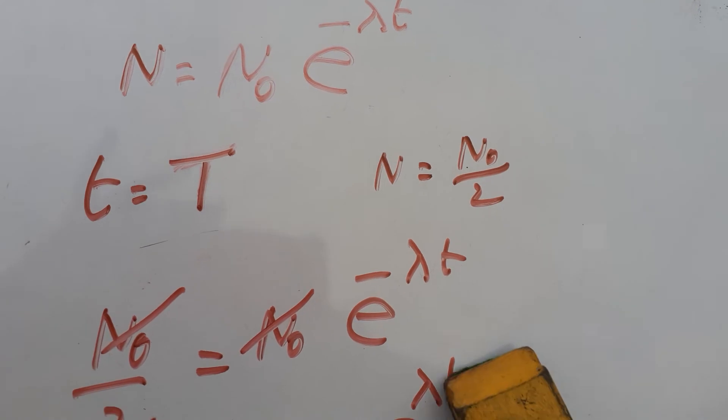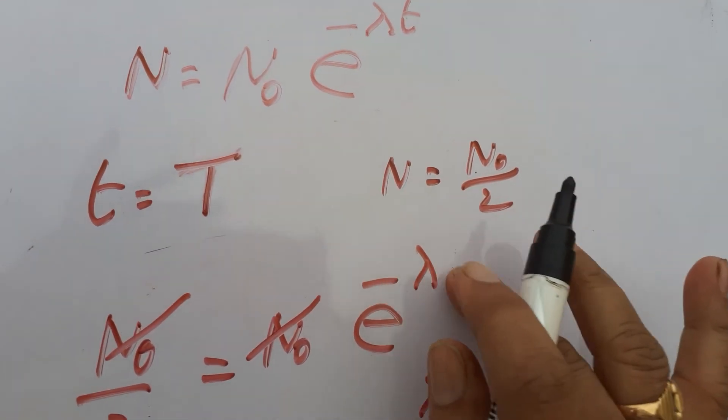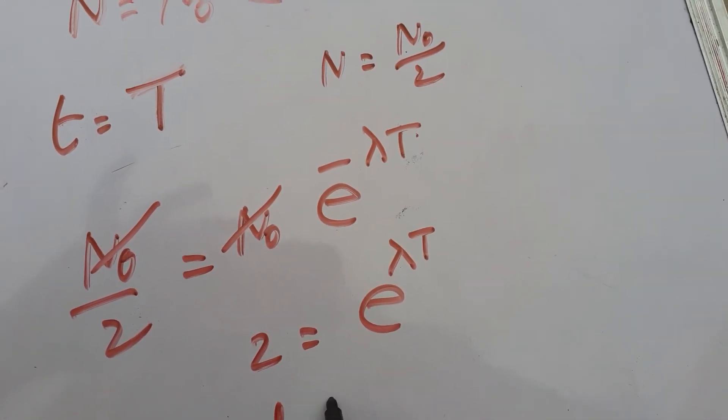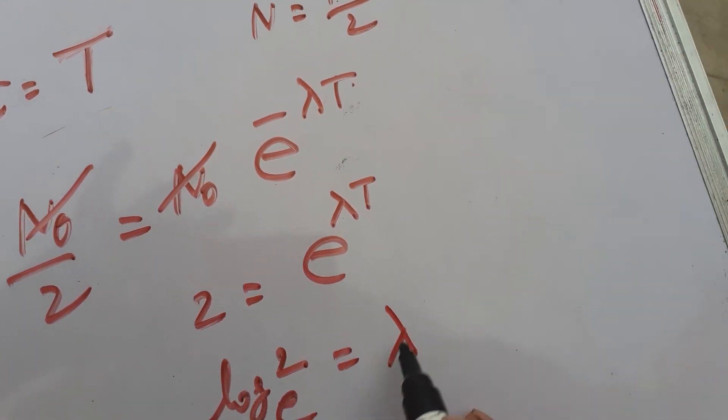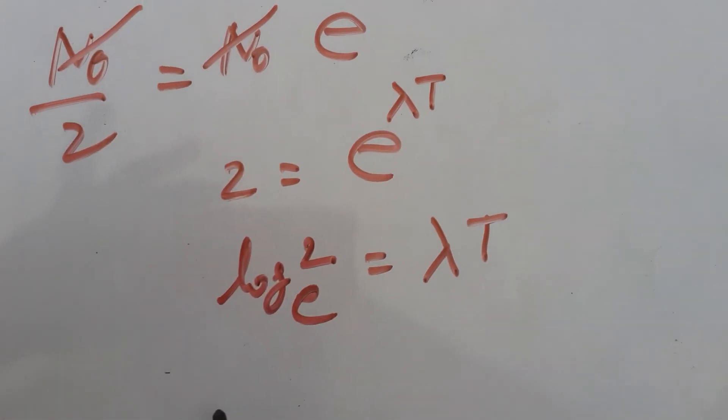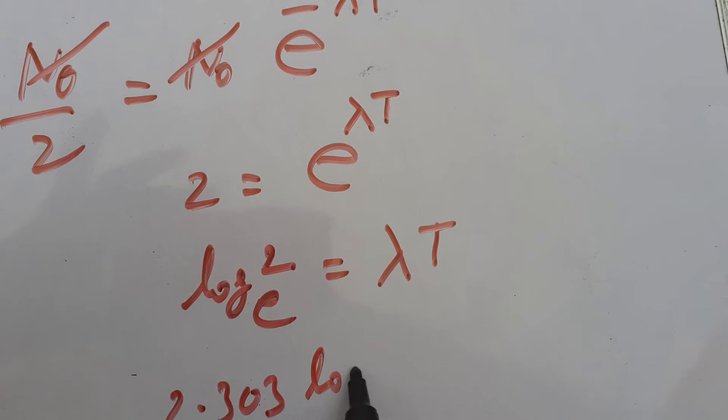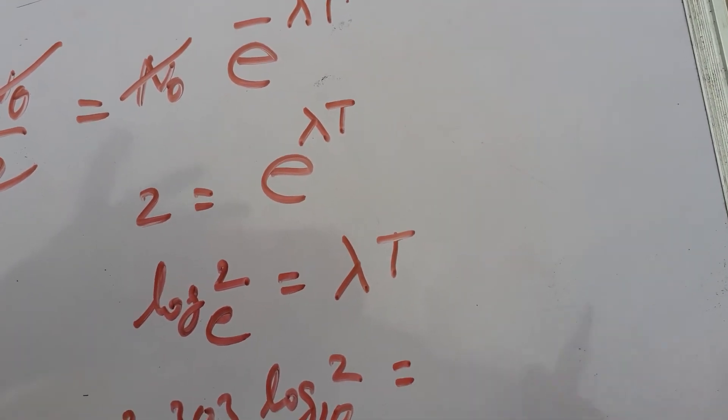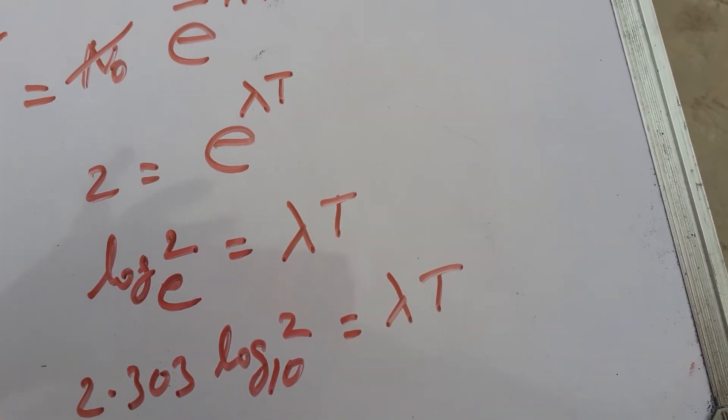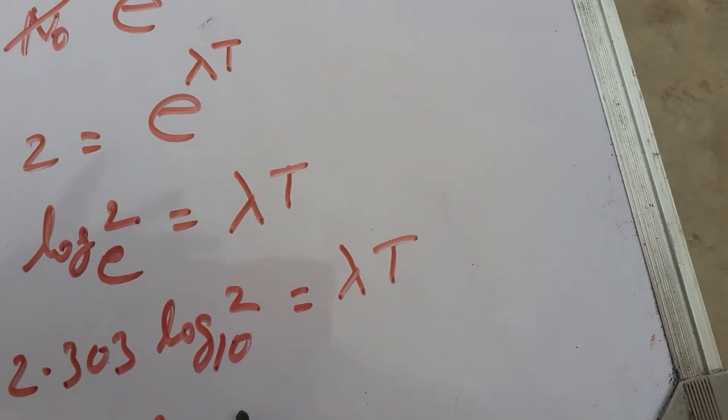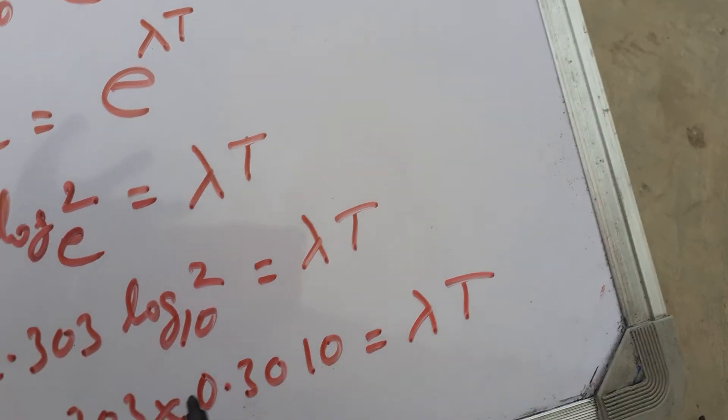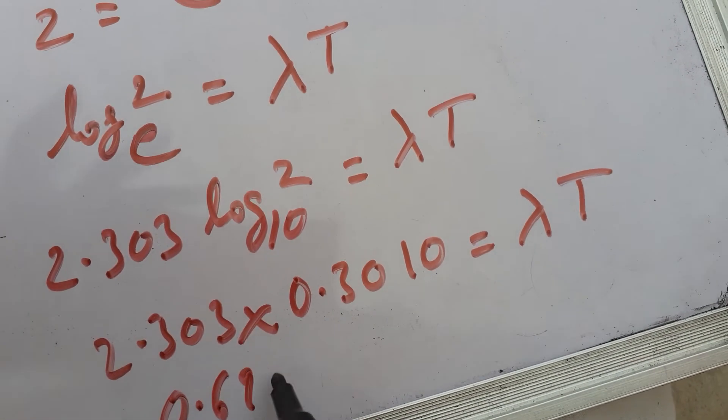So log 2 base e = λT. Convert this into base 10: 2.303 log 2 base 10 = λT. That is 2.303 × 0.3010 = λT. Multiplying we get 0.693 = λT.